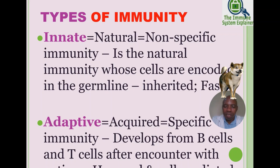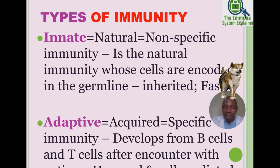The second arm is adaptive immunity, also referred to as acquired or specific immunity. It develops from B cells and T cells after an encounter with an antigen. The adaptive immunity is divided into two arms: the humoral arm, mediated by B cells, and the cell-mediated arm, mediated by CD4-positive and CD8-positive T cells.